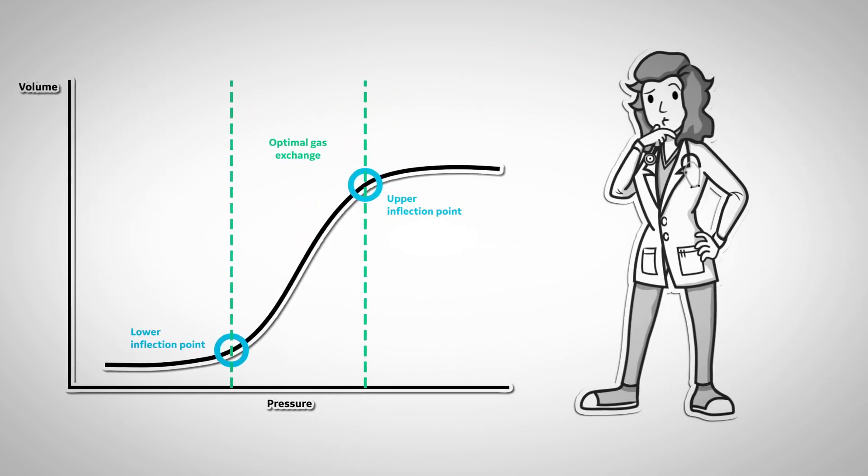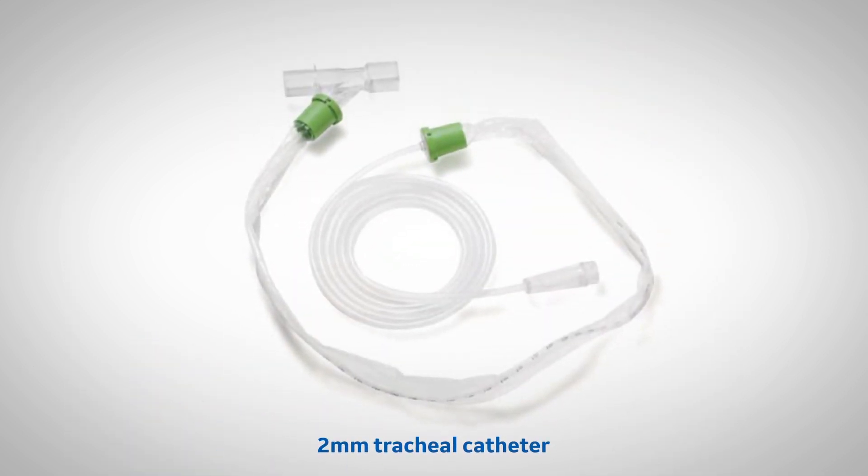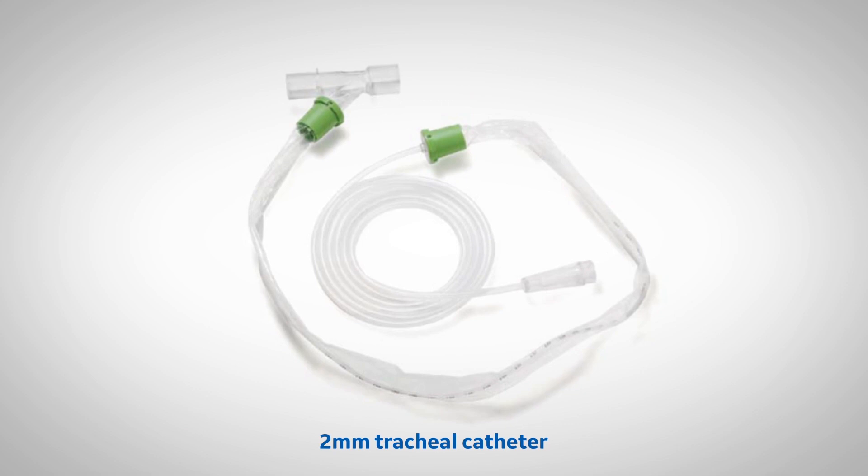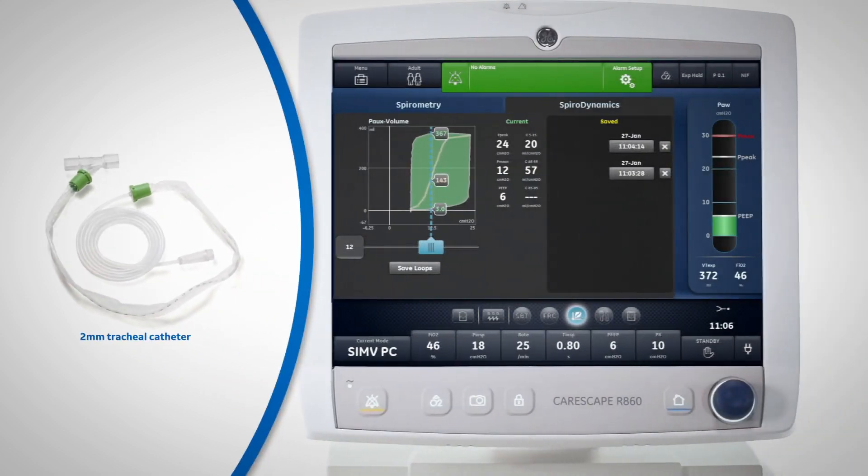Sometimes it can be difficult to visualize the upper and lower inflection points using the pressure-volume loop. The CareScape R860 offers measurements on tracheal pressures and intrinsic PEEP via a small 2mm tracheal catheter and the use of the SpiroDynamics Clinical Decision Support Tool.